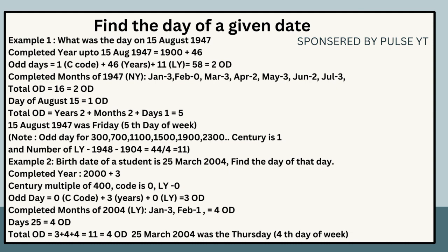Example 2: Birth date of a student is the 25th of March 2004; find the day. Completed years: 2000 + 3. Century 2000 is a multiple of 400, so code = 0. Odd days = 0 (century) + 3 (years) + 0 (leap) = 3 odd days. Completed months of 2004 (leap year): JAN = 3, FEB = 1. Total = 4 odd days. Days: 25 ÷ 7 = remainder 4 odd days. Total = 3 + 4 + 4 = 11 ÷ 7 = remainder 4. The 25th of March 2004 was Thursday (4th day of the week).